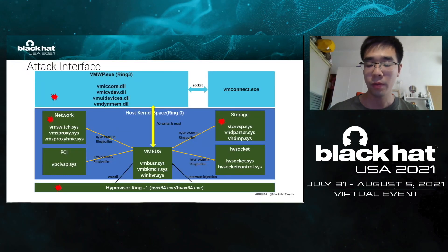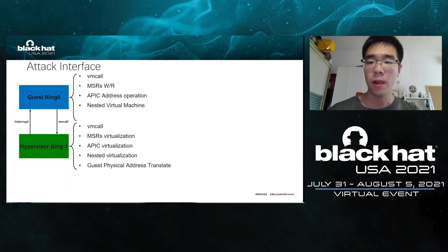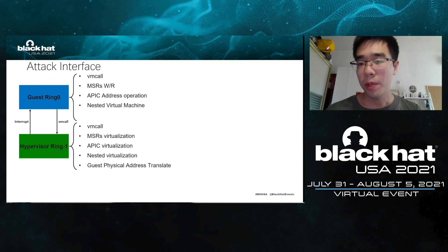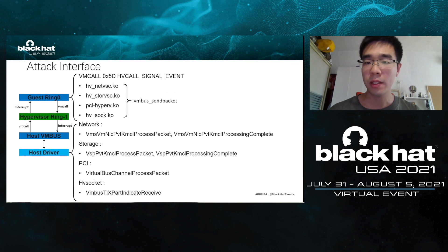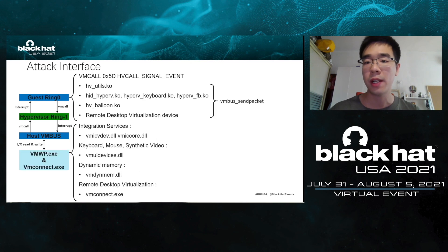About attack interface: this figure is an overview of Hyper-V's attack interface, where the red markers represent components where vulnerabilities have been disclosed so far. The hypervisor attack interface can be reached by executing VM call instructions, reading and writing MSR registers, operating on an APIC address, and running a nested virtual machine. The VMBus attack interface can be reached by sending channel messages. The host driver attack interface can be reached by calling VMBus send packet function to send guest data to a specified virtual device. The figure also shows the relationships between driver files in the virtual machine and Ring 3 components in the host machine.